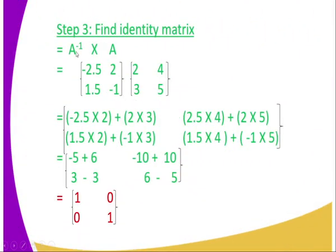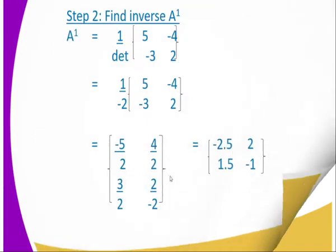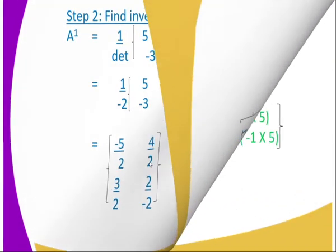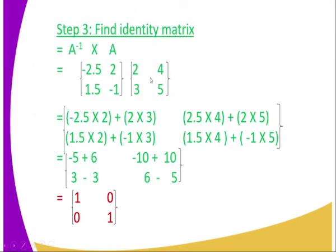Step three: to find the identity matrix, you multiply the inverse of A by matrix A. The inverse obtained in step two is [[−2.5, 2], [1.5, −1]]. You take that inverse and multiply it by matrix A, applying the row-column multiplication rule as explained in previous lessons.